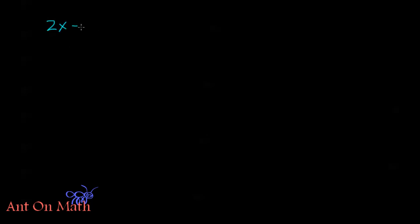We've all seen solving equations before in pre-calculus or in algebra. If we have an equation, let's say 2x minus 5 is equal to 3. If you're given this equation in another course, you're asked to solve for x — what that means is we're trying to find all values of x such that when you plug in those values, this equation is true: that 2 times that value of x minus 5 is actually equal to 3. So we do this by isolating x.